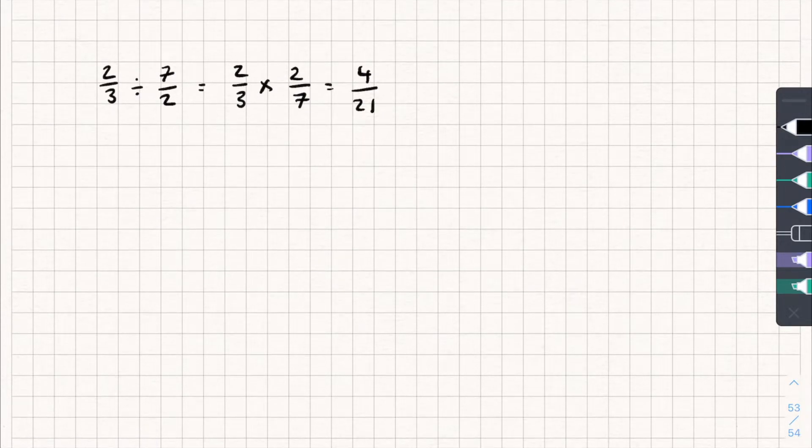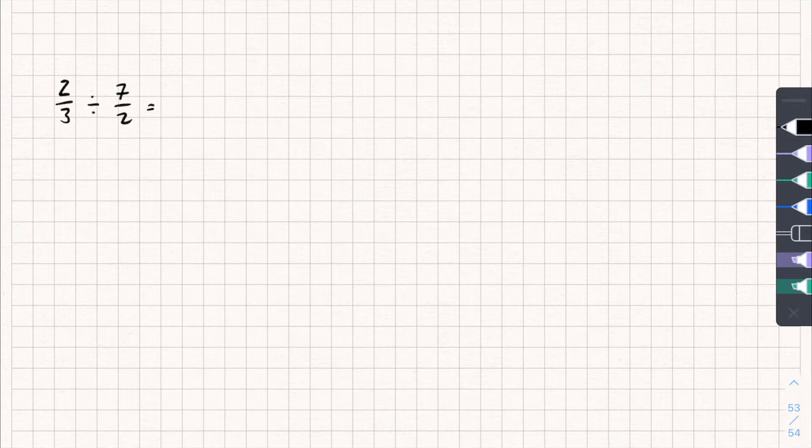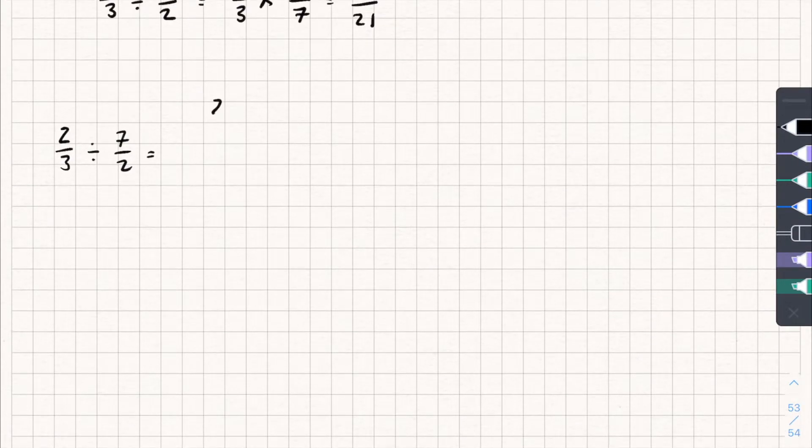Well, let's write this slightly differently. So we've got two over three divided by seven over two, and we could actually write this like so. We could write it as two over three all divided by seven over two. So we've written it as one big fraction, which we can do, that's fine, but it is a bit ugly. This is quite an ugly fraction.